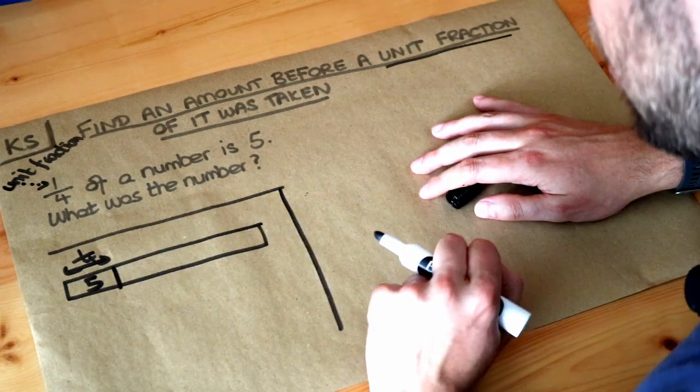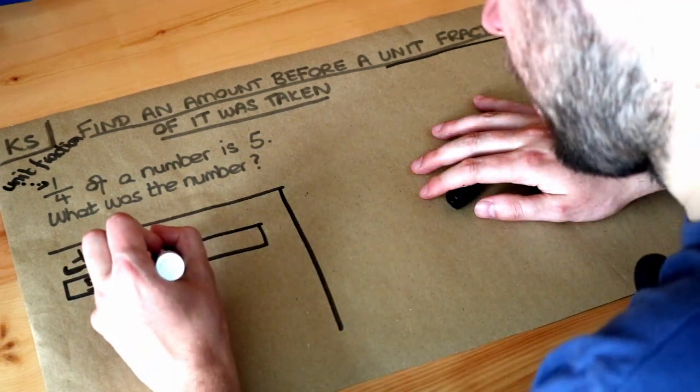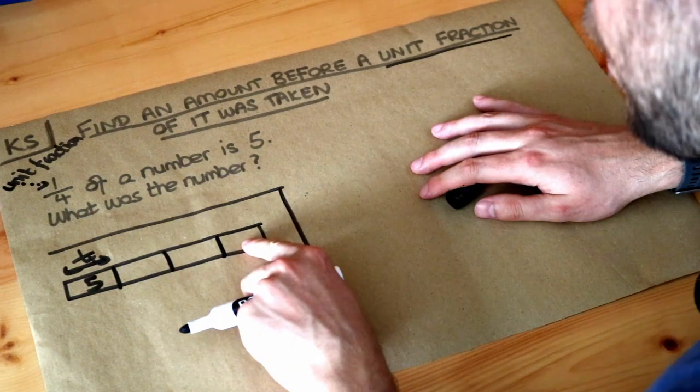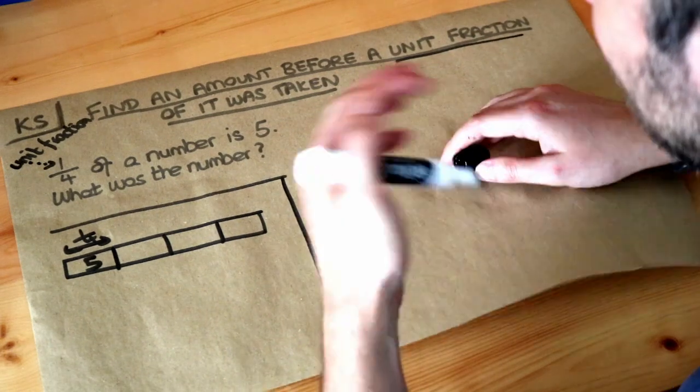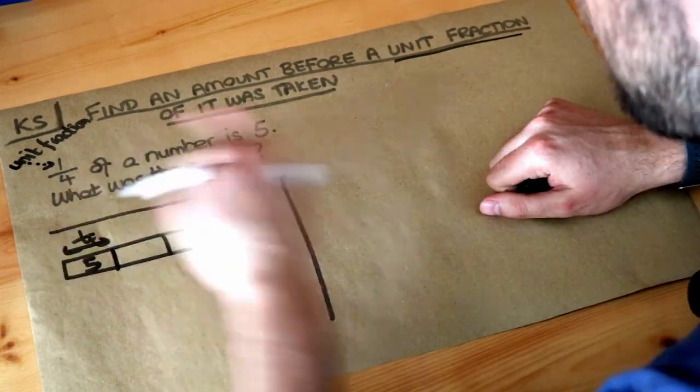Well how many quarters go into a whole? 1, 2, 3, 4. Four quarters go into a whole. That's what a quarter means. It means we've taken a whole and divided it up into four pieces.